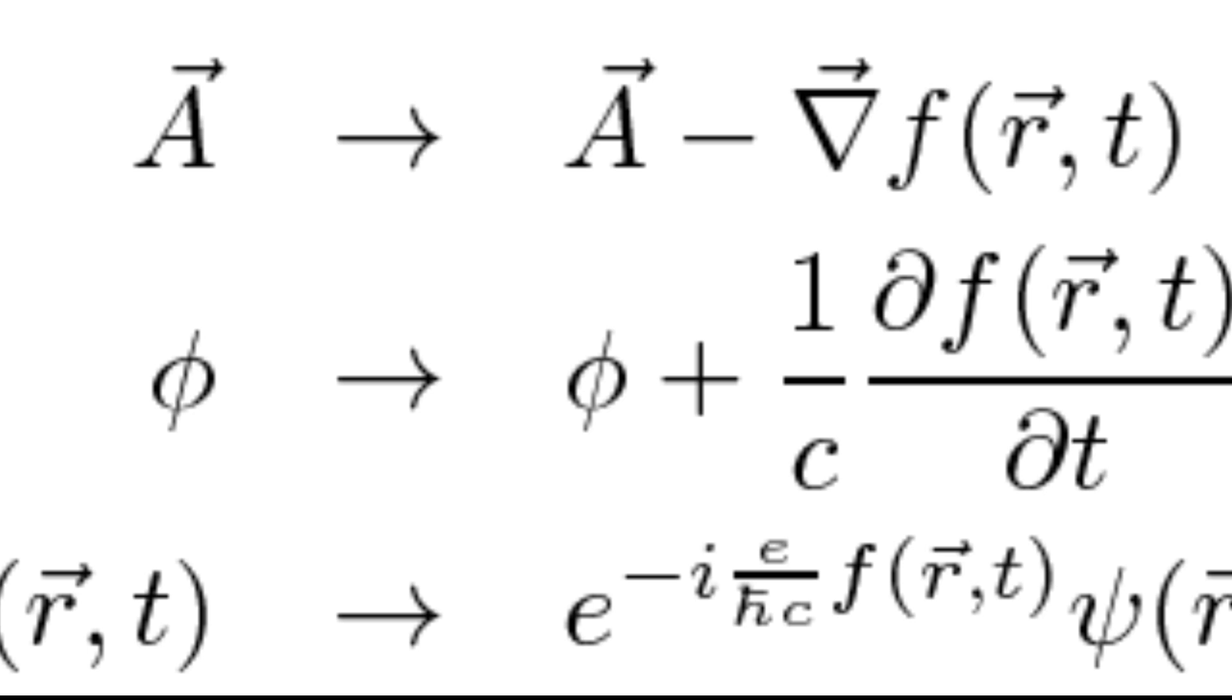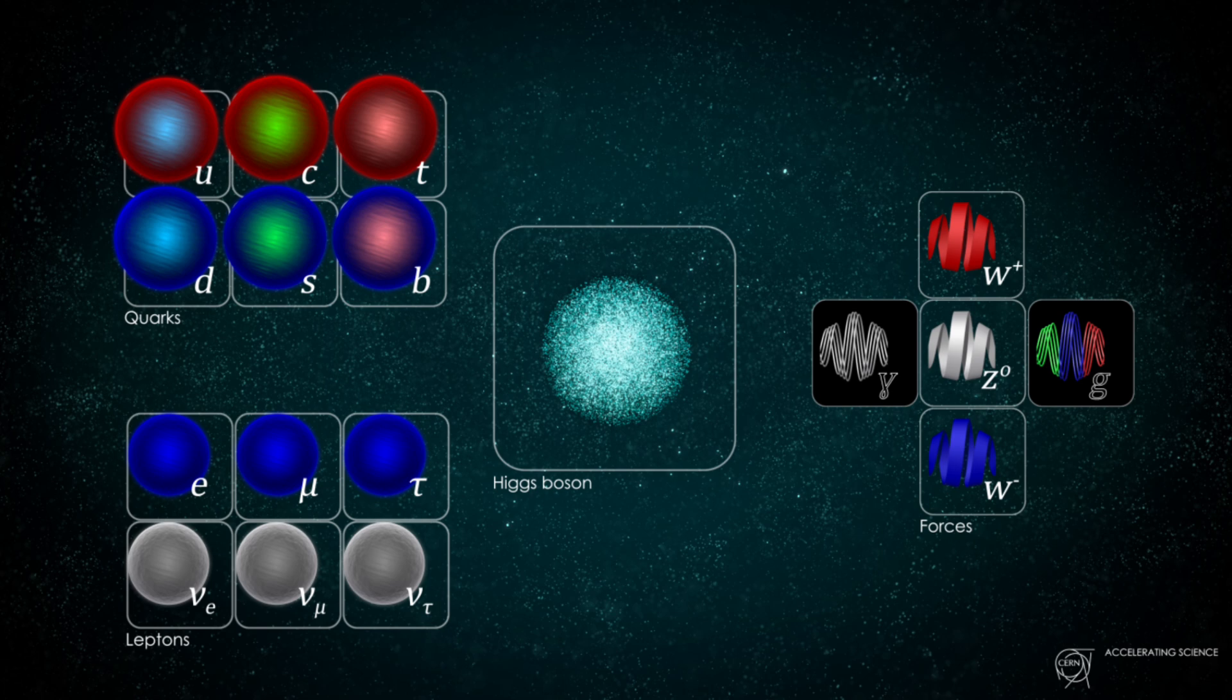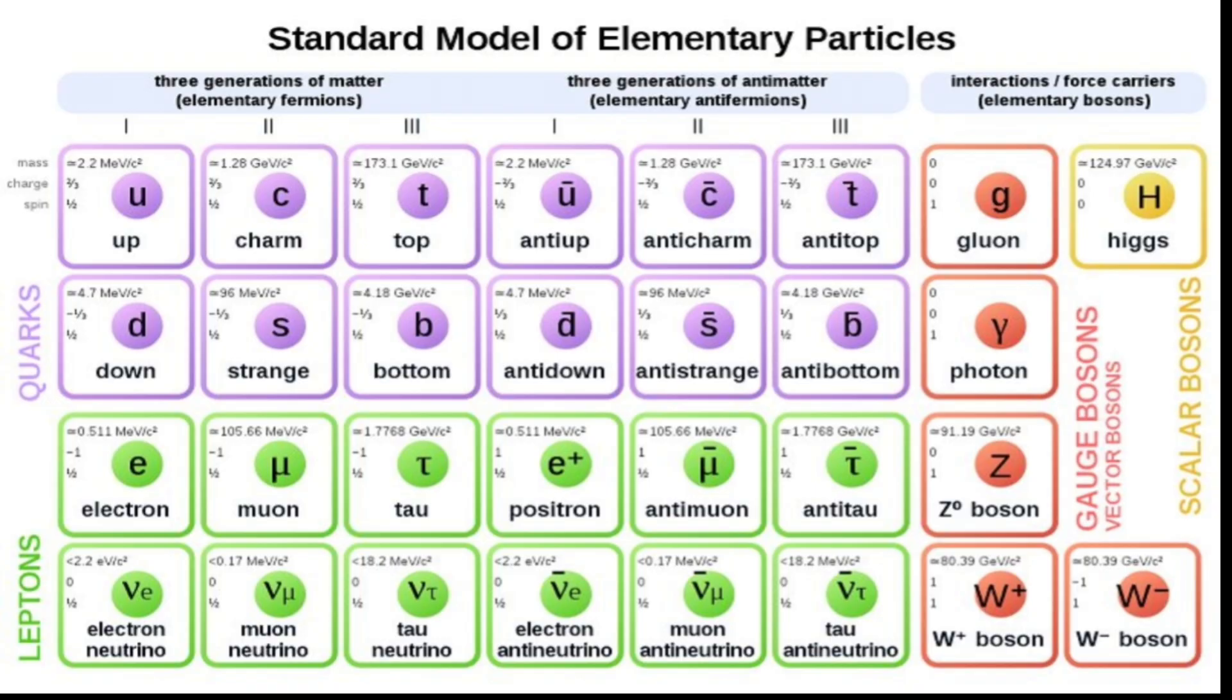QFT also uses a special classification called the standard model, which organizes all the known particles and fields into groups and families according to their properties and interactions. For example, this table shows the standard model of particle physics, which includes 12 matter particles—6 quarks and 6 leptons—4 force particles—the photon, the gluon, the W and Z bosons—and 1 Higgs particle.